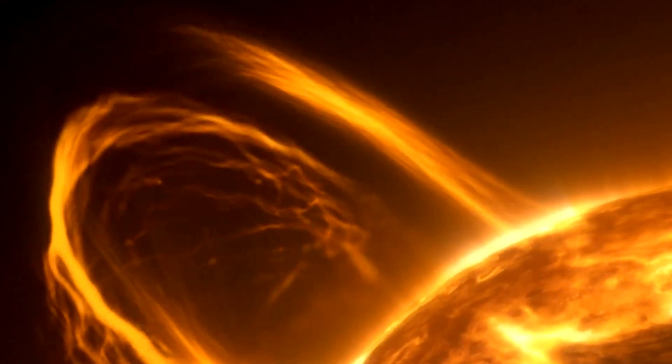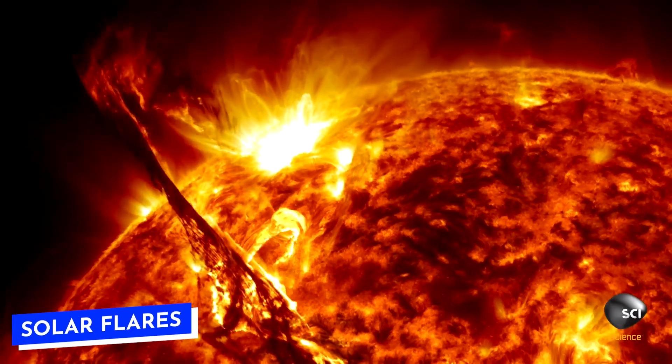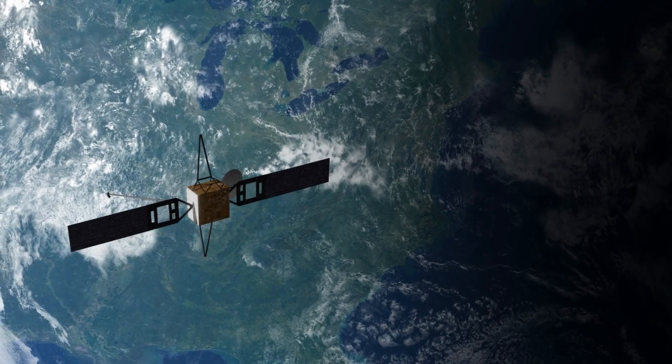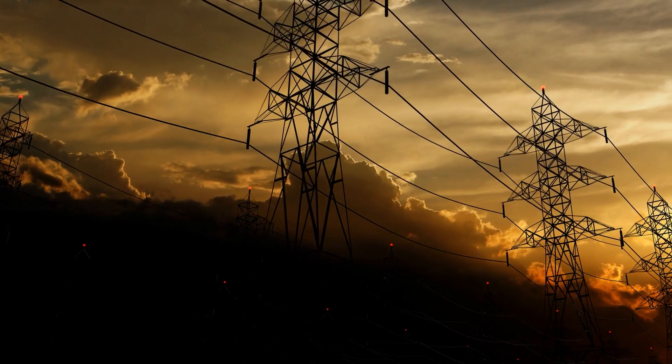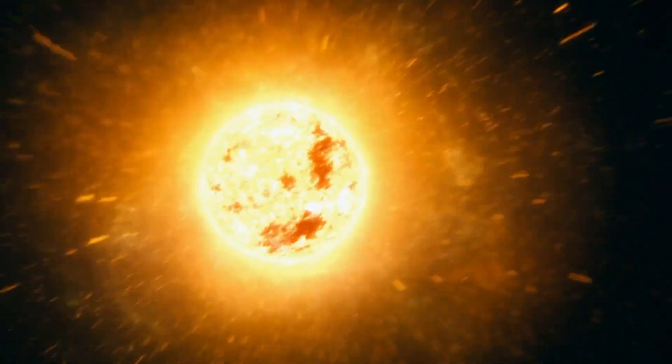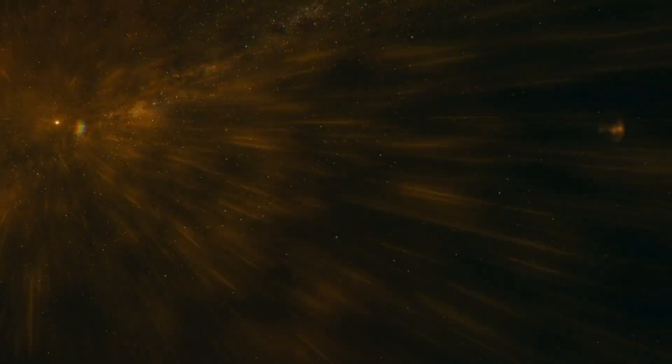Now, imagine the sun exploding with a monstrous burst of energy. That's what solar flares are, and they're absolutely terrifying. This isn't just a light show, it's a wave of radiation that can mess with everything from satellites to our entire electrical grid. This year, in 2024, it is speculated that a big solar flare could hit the Earth.